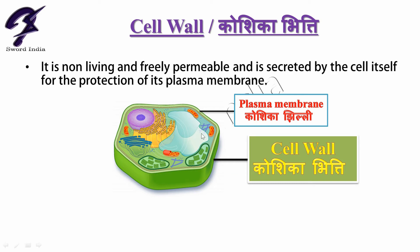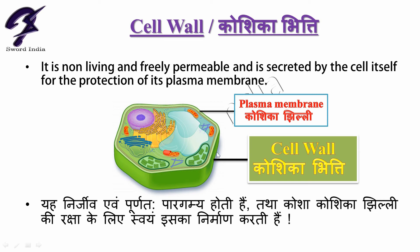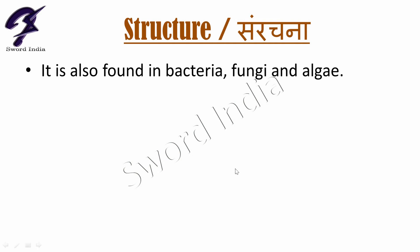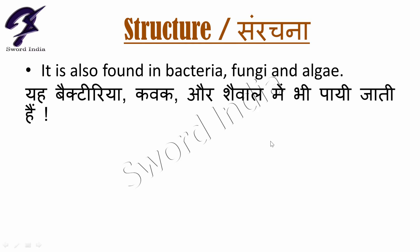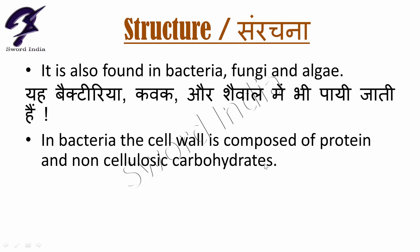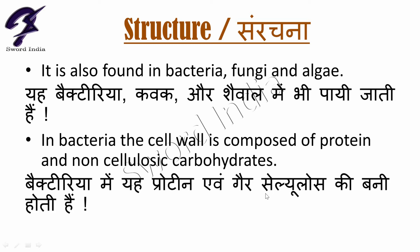The cell wall is non-living, freely permeable, and is secreted by the cell itself for the protection of the plasma membrane. It is found in bacteria, fungi, and algae. In bacteria, the cell wall is composed of protein and non-cellulose carbohydrates — bacteria mein protein aur cellulose se nahi bani hoti.